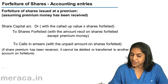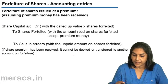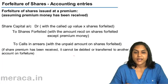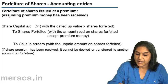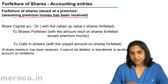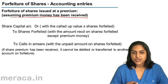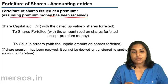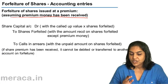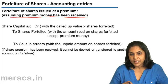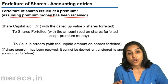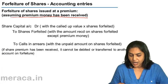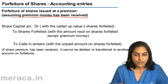Next, forfeiture of shares issued at a premium. What are the accounting entries for forfeiture of shares issued at a premium? This is of two types: one, assuming the premium money has been received, and two, what happens if the premium money is not received. If share premium has been received...